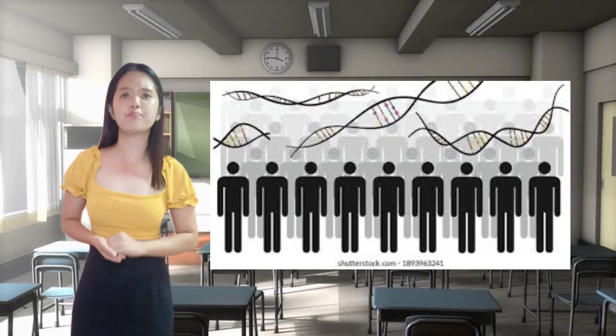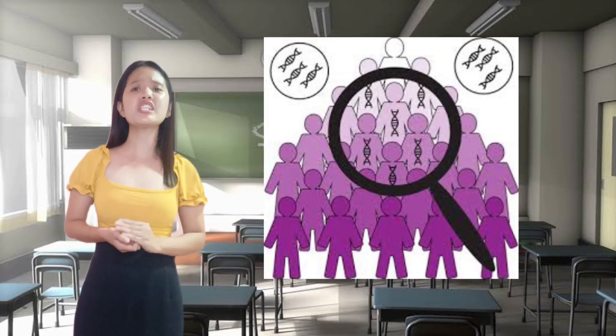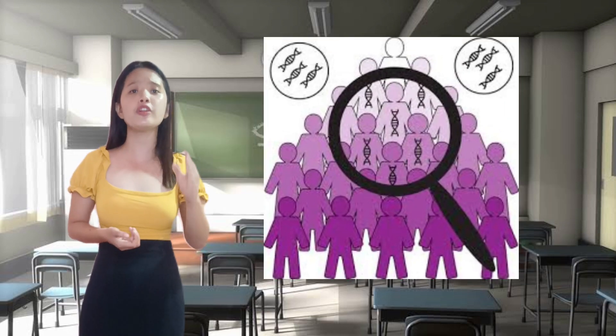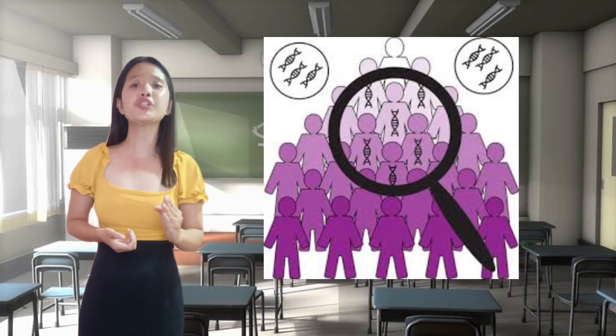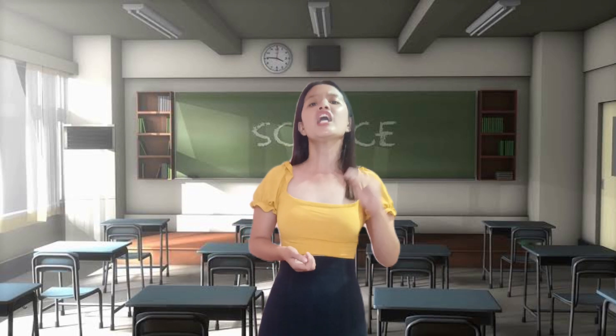In population genetics, it studies the genetic makeup of different populations and how genes are passed on from one generation to the next. It is critical in understanding the genetics of human populations, endangered species, and their conservation.